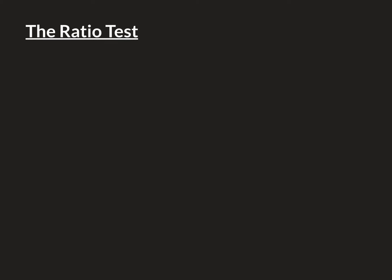This video is going to be on the ratio test for convergence of an infinite series. We'll begin by stating what the ratio test says, and then we'll spend the rest of the video trying to understand why it's true. If we have an infinite series, the sum from i equals 1 to infinity of a_i, and we want to know whether this series converges to a finite value or diverges off to infinity, one of the tests we can use is the ratio test.